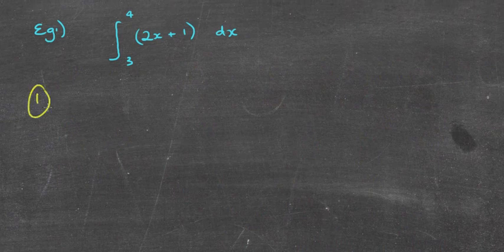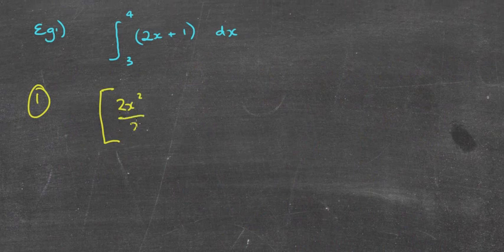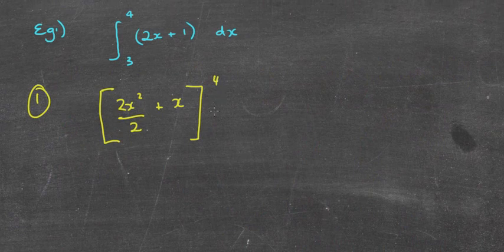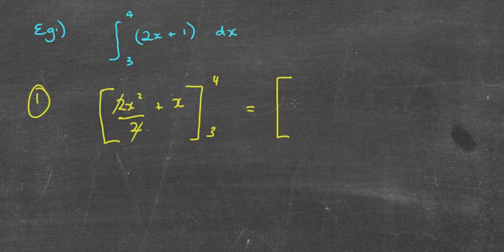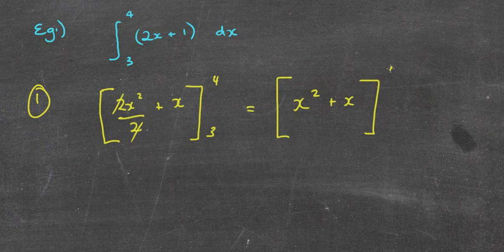Alright, so first step: let's integrate. 2x²/2 plus x in brackets, 4 and 3. So I simply integrated it and then I've put my values 4 and 3 there. I'm now going to, before I go ahead and actually substitute, I'm just going to cross those 2's out and simplify it. So I've got x² + x, and then I've got 4 and 3.